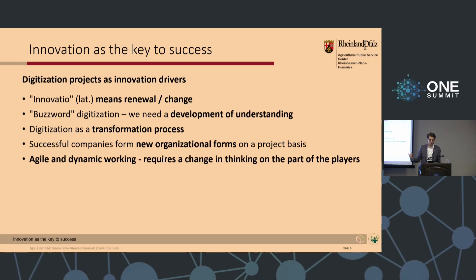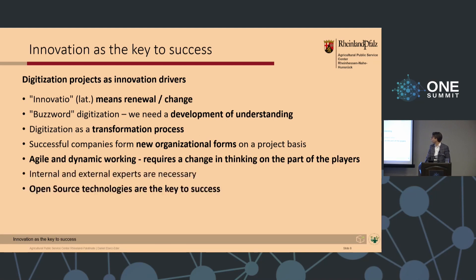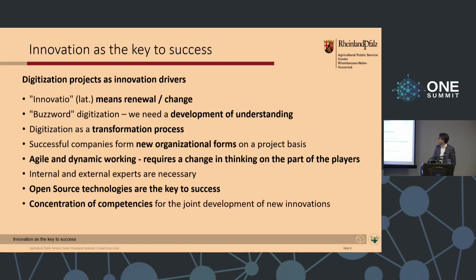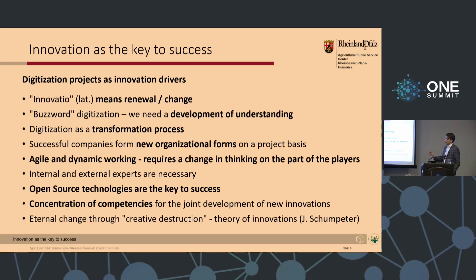We know that successful companies form new organizational forms on a project basis, and agile and dynamic work requires a change in thinking on the part of the players. That's really important. For our strategy, open source technologies are the key to success — that is very important here in our summit. The best innovation is nothing without simultaneously a concentration of competences. The theory of innovation by Schumpeter says 'eternal change through creative destruction,' and that is what we want to do now.